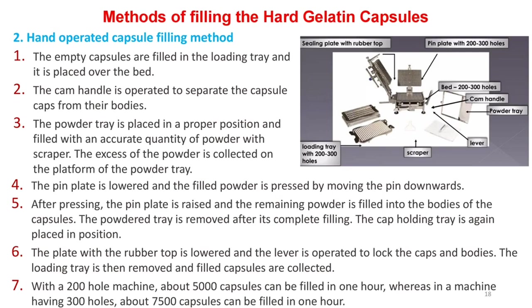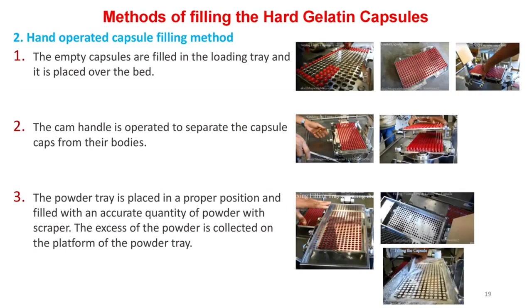With a 200-hole machine, about 5,000 capsules can be filled in one hour, whereas with a machine having 300 holes, about 7,500 capsules can be filled in one hour.